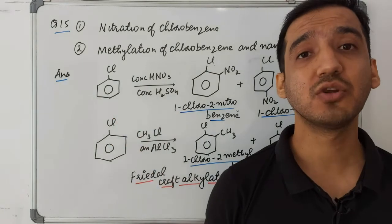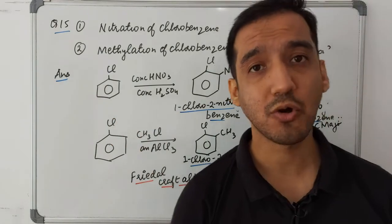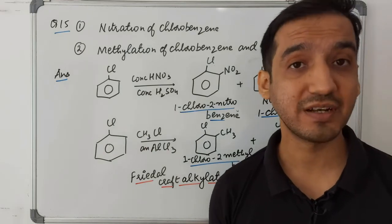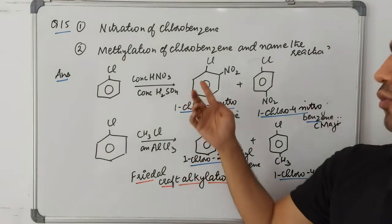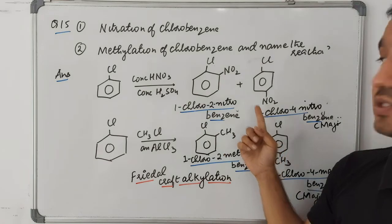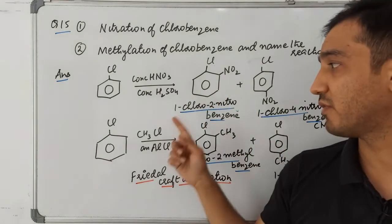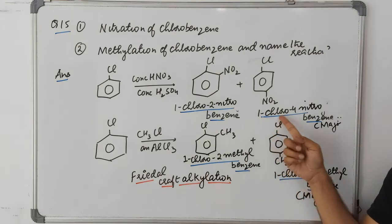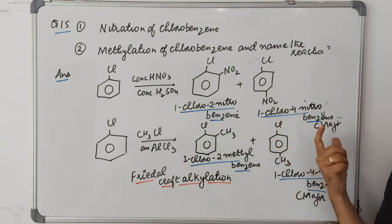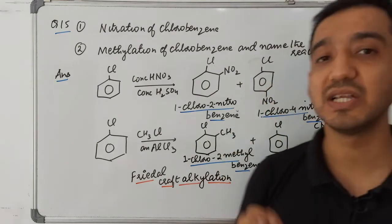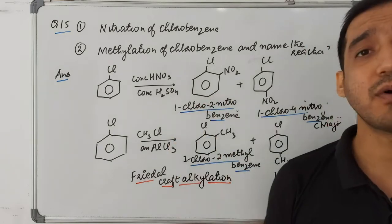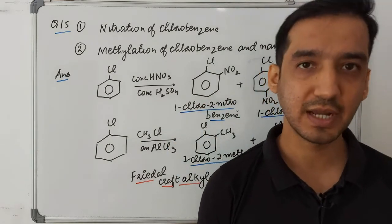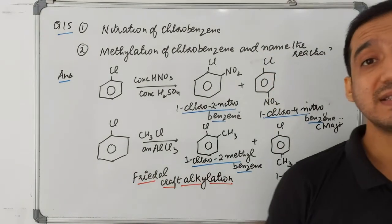Question fifteen, part one: nitration of chlorobenzene. Using a nitrating mixture of HNO₃ and H₂SO₄, NO₂⁺ (nitronium ion) gets attached to chlorobenzene at the ortho or para position. The ortho product is 1-chloro-2-nitrobenzene and the para product is 1-chloro-4-nitrobenzene. The para product is the major product. These reactions are called electrophilic aromatic substitution reactions.